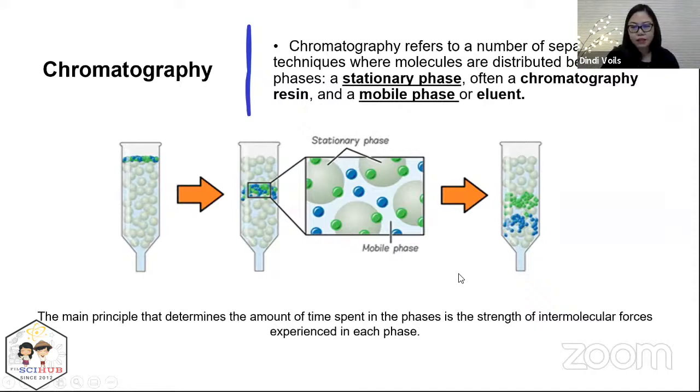Anything that has stronger interaction with your stationary phase tends to hang out in your stationary phase longer than the ones that have weaker interaction. In this diagram here, the green ones have stronger IMFA with the stationary phase compared to the blue ones, so the blue ones will show first on your chromatogram followed by the green ones.